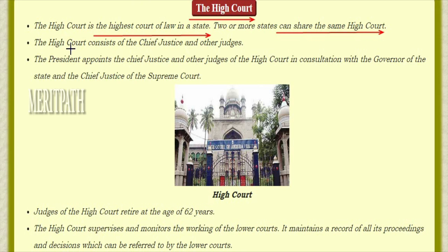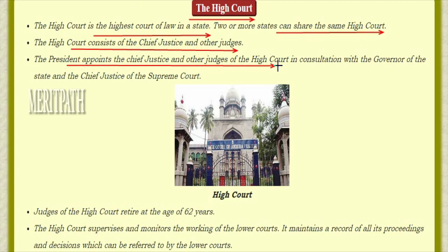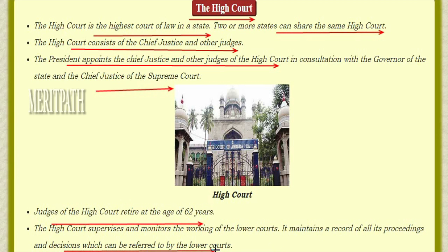The High Court consists of a Chief Justice and other judges, same as the Supreme Court. The President appoints the Chief Justice and other judges of the High Court in consultation with the Governor of the state and Chief Justice of the Supreme Court. Judges of the High Court retire at the age of 65 years. The High Court supervises and monitors the working of the lower courts and maintains the record of all proceedings and decisions which can be referred to by the lower courts.